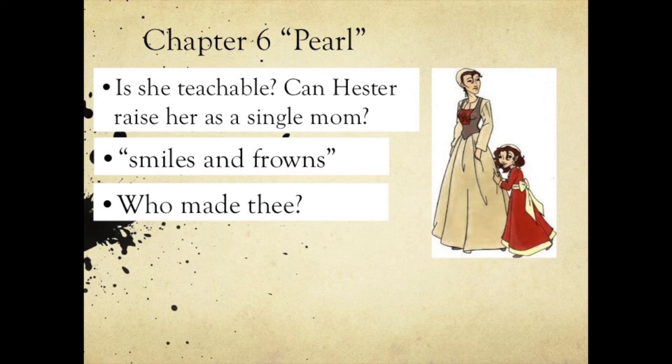By the end of Chapter 6, you get this impression of a wild child who will not follow any of the rules, won't listen to her mother, and won't follow her religious instruction. That takes us into Chapters 7 and 8, which involves the governor and some of the leaders of the town wanting to remove Pearl from Hester's home.